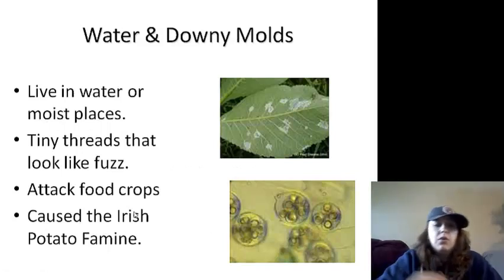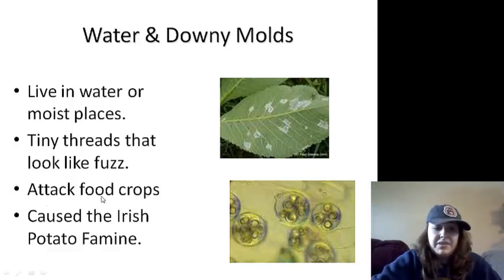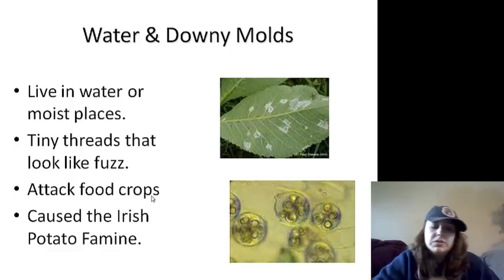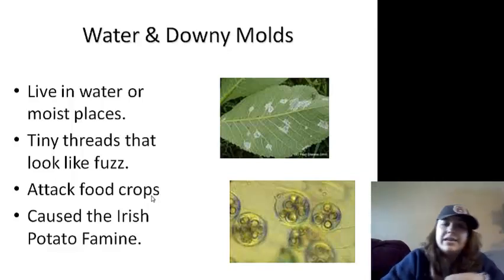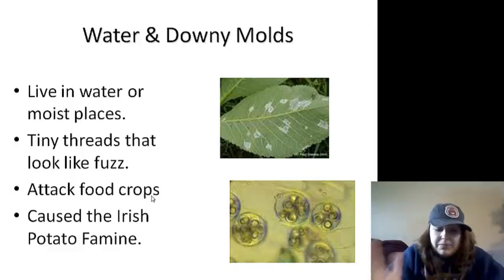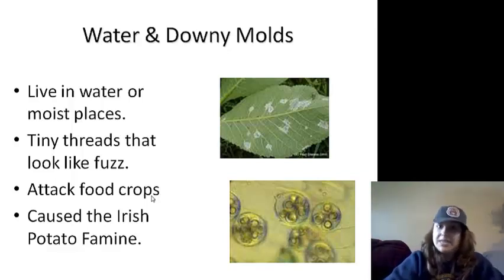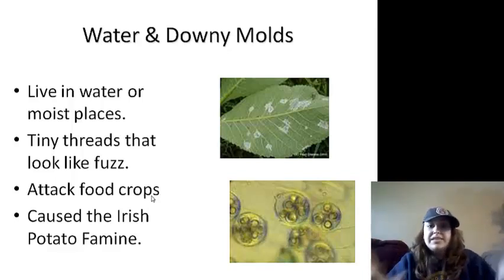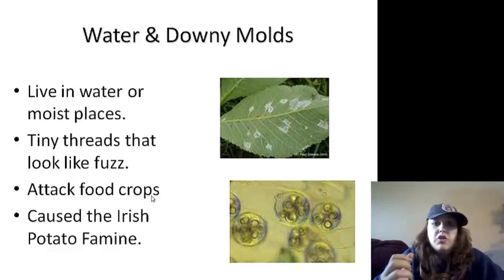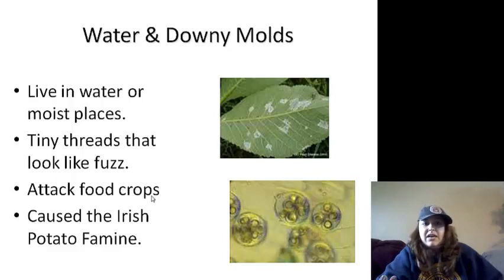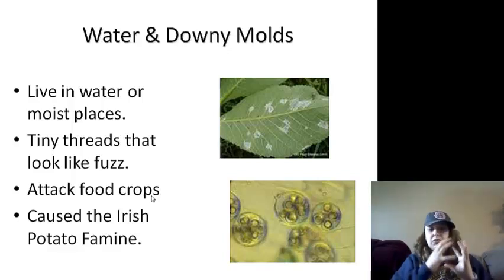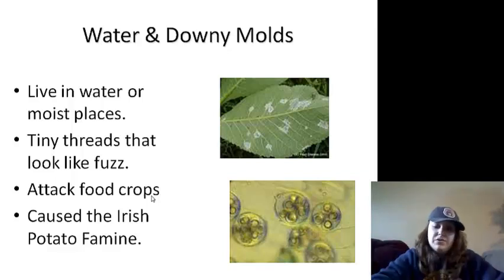The water and downy molds must live in water or moist places. They are tiny thread-like structures that look like fuzz — you might see them on leaves. They attack food crops. The water molds specifically caused the Irish potato famine. Over in Ireland, people relied on eating potatoes. This water mold came through and devastated the potato crops — no potatoes. Hundreds of thousands to millions died due to the famine. We also call it the mass exodus from Ireland, as people left to find food in other countries.